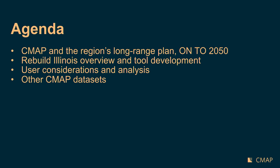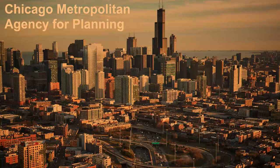I'll start with CMAP and our region's long-range plan On To 2050, then give a brief overview of Rebuild Illinois and some components of the $45 billion capital infrastructure package. I'll talk about how we developed our searchable tool, considerations for using it, analysis we've done since developing the tool, and then briefly show some other data sets that might be of interest to folks here tonight.